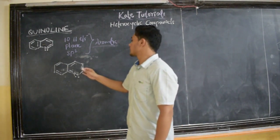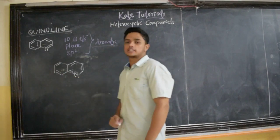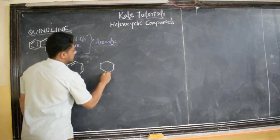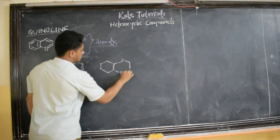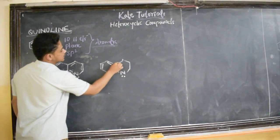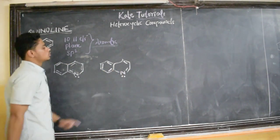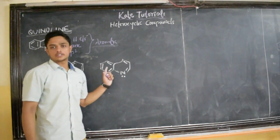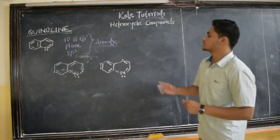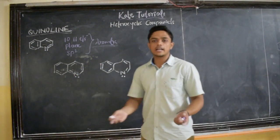The totality has got 2, 4, 6, 8, 10 — 5 double bonds. So this structure is also the same. I can also write the structure like this: double bond, single bond, double bond, single bond, single bond, double bond, single bond, double bond — total 10 pi electrons, and all are in conjugation. So this is also a valid structure. I may write like this, or like this, or like this — all are equivalent.